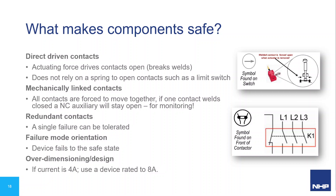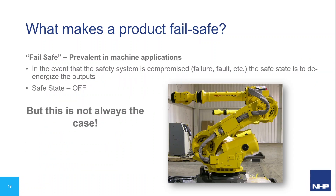Safety devices are designed so that when they fail, they also fail to a safe state — this is called failure mode orientation. Over-dimensioning is another feature: if you're switching 4 amps, you select a component rated for 8 amps to further reduce risk of failure. In machine safety applications, the typical fail-safe state is to remove power from all outputs. However, the failure mode orientation always needs careful consideration to make sure it's suitable for the risk being reduced — you can't have a device turn off and produce an even more hazardous situation.